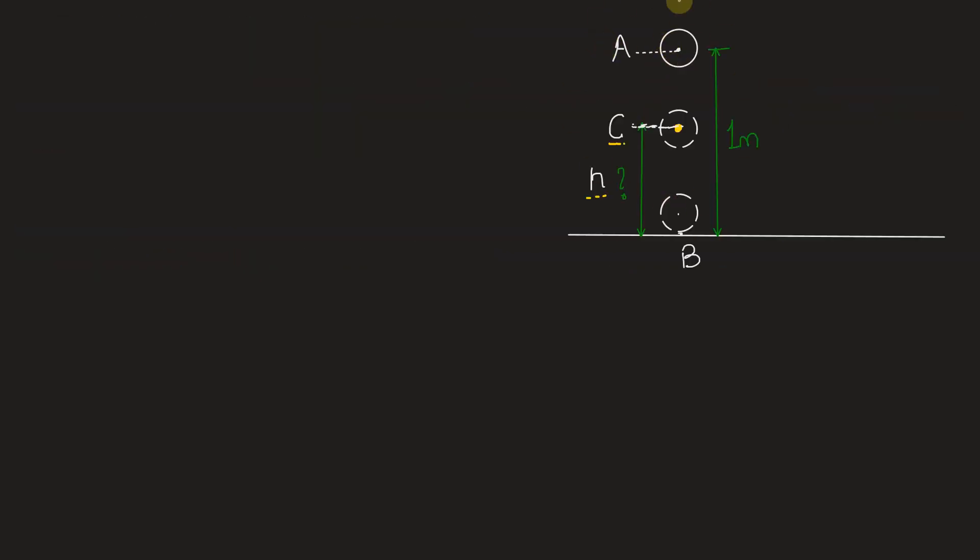So this is the phenomena that is given in the question. Ball first is at rest at position A from which it is dropped to B from a height of 1 meter. Then it bounces back to C which is situated at height small h. This is what we have to find out.